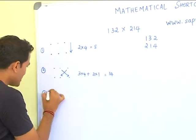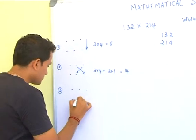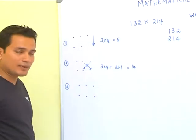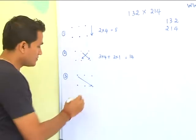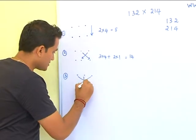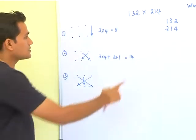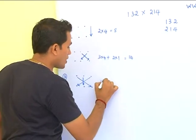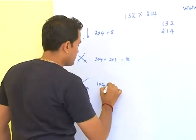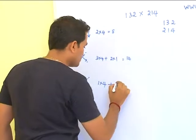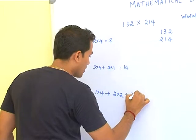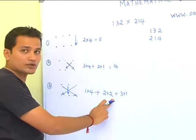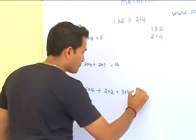So, the third step. This is very important. Do a plus-cross multiplication, taking all the 3 digits at a time. So you have to take the first digit and the last digit and do a plus-cross multiplication. The formula is here. It is 1 into 4 plus 2 into 2 plus 3 into 1. 4 plus 4, 8 plus 3, 11.